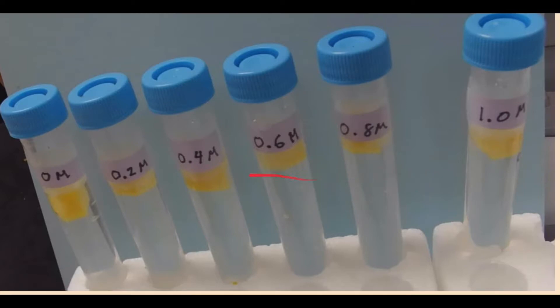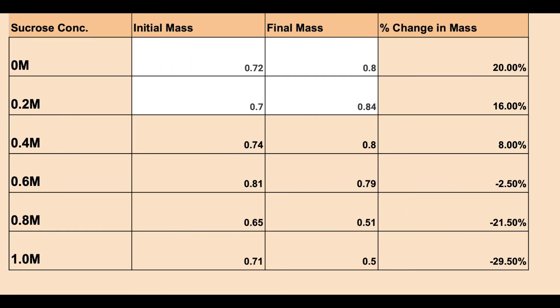So we're going to set it up just like this. We have 0 molar, 0.2, 0.4, 0.6, 0.8, and 1.0 molar sucrose. That's the surrounding solution. And we're taking our equal-sized pieces of the pumpkin core and putting them in the tubes. Wait overnight, get the mass right now before we put it in, get it after it sat overnight, and behold, we have a percent change in mass.